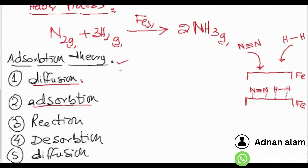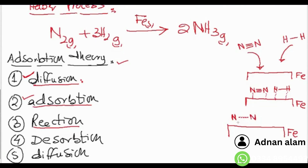Step 3 — reaction: the reaction takes place on the surface of the catalyst. Old bonds break — the N–N bond breaks and the H–H bond breaks — and new bonds form between nitrogen and hydrogen to produce NH₃. The molecules remain adsorbed on the surface while the reaction occurs.